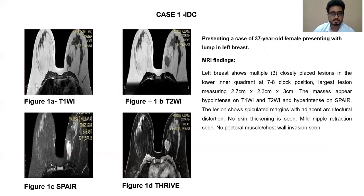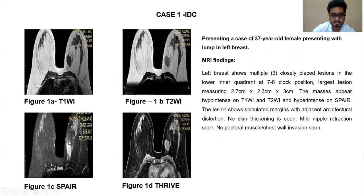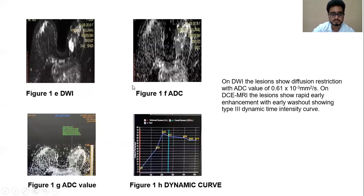I'm now going to present 2 cases included in my study. The first is a 27-year-old female presenting with a lump in the left breast. The left breast shows multiple closely placed lesions in the lower inner quadrant at the 7 to 8 o'clock position. The masses appear hyper-intense on T1 and hyper-intense on STIR images, and also hyper-intense on T2. The lesion shows slight spiculation; however, no skin thickening, pectoral muscle invasion, or chest wall invasion is seen. Slight nipple retraction was observed. On diffusion-weighted images, diffusion restriction was noted and a type 3 dynamic time intensity curve was obtained.